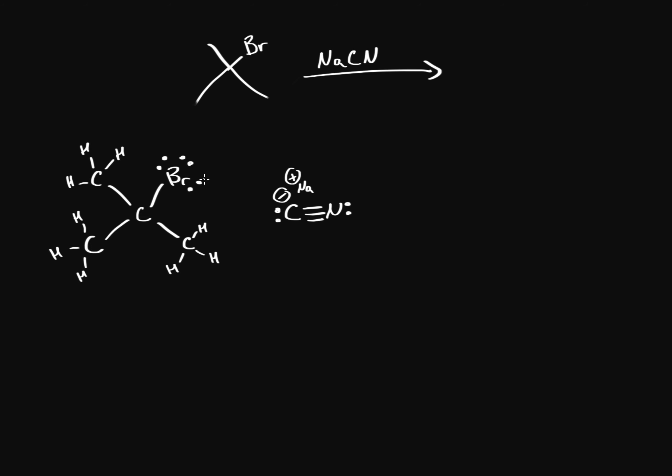Previously we saw that when we have an unhindered substrate the strong nucleophile will do an SN2 mechanism, and then we realized that when it became hindered the strong nucleophile acted like a strong base and so we got the elimination mechanism, the E2 mechanism.